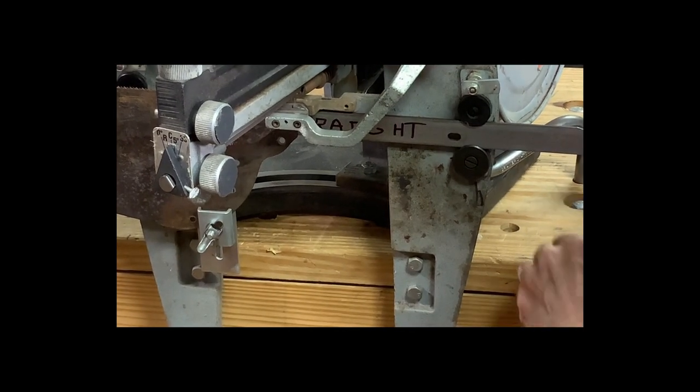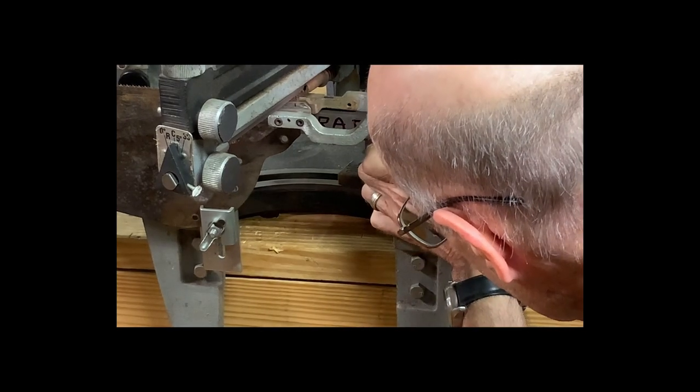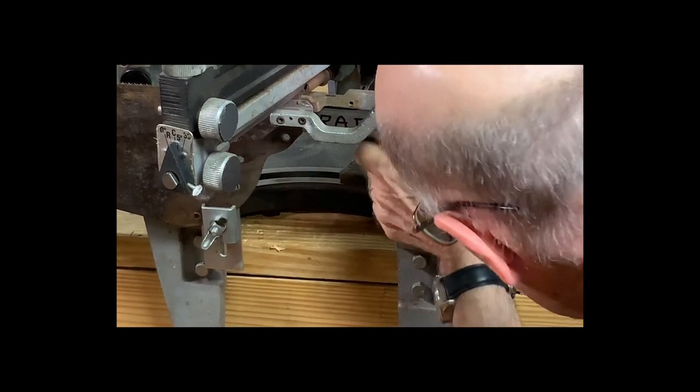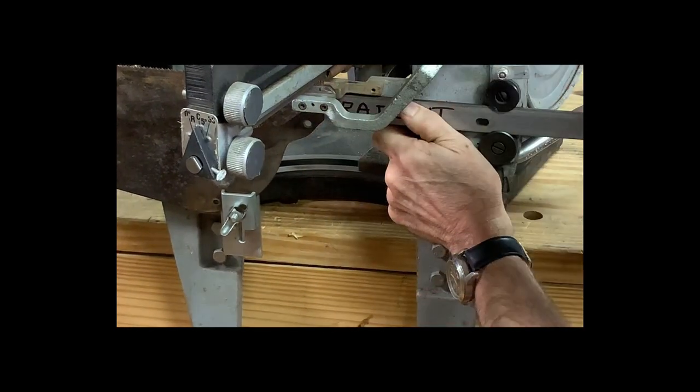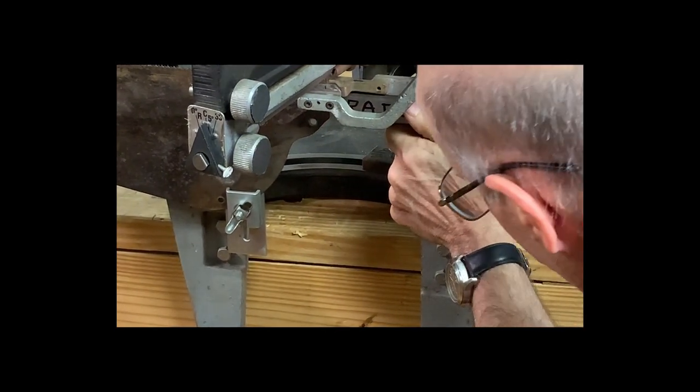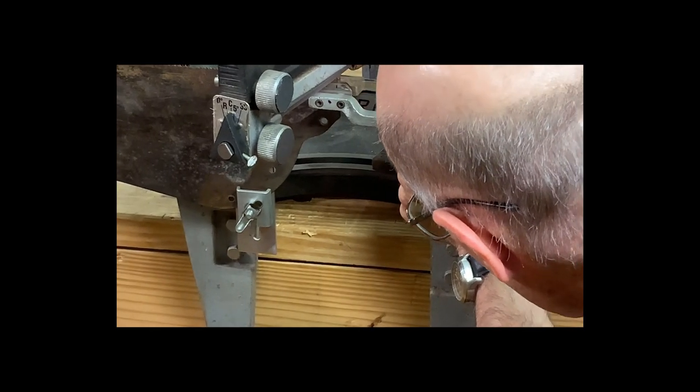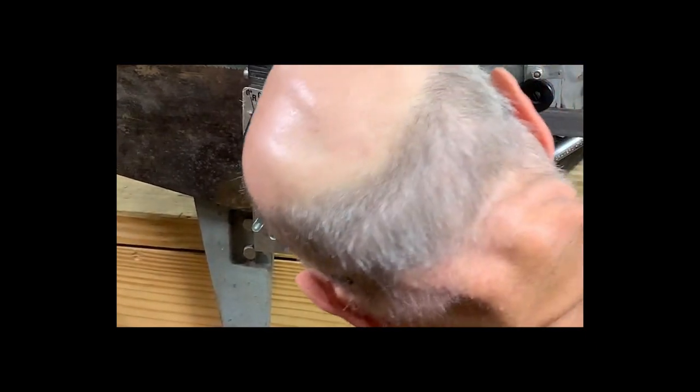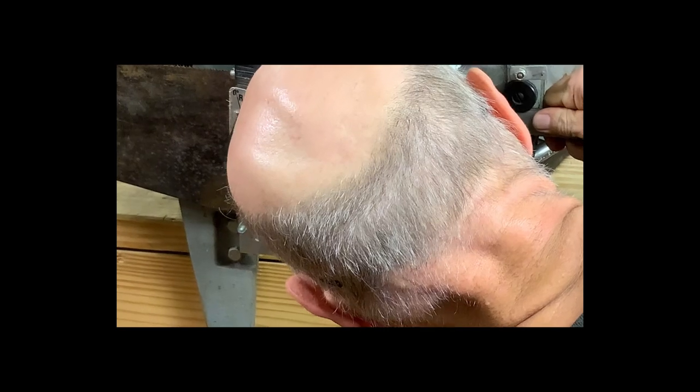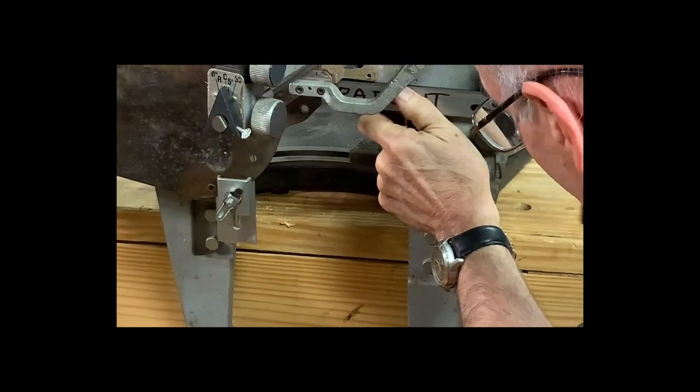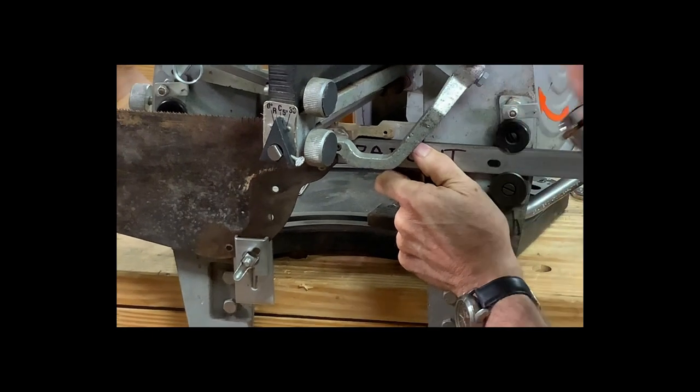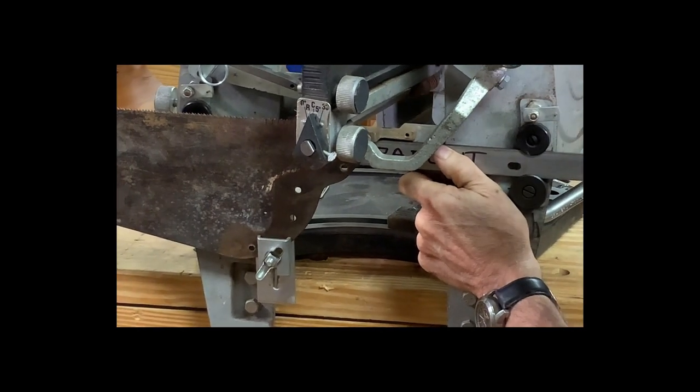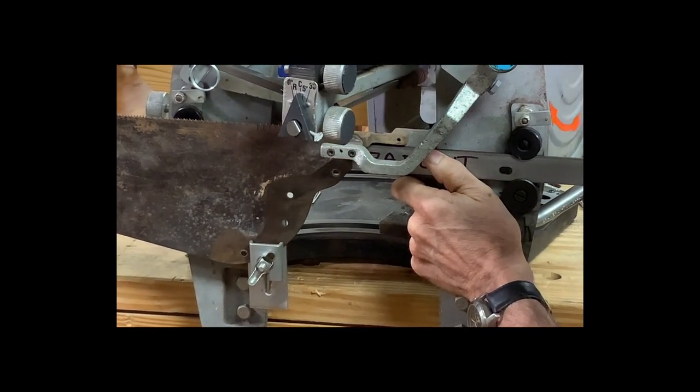Get this centered right there at the bottom of the gullet. So, what you do is you lower it down and you sort of move this bar back and forth. There we go. It's centered now.